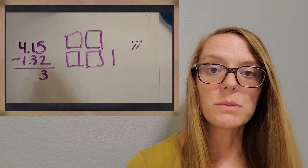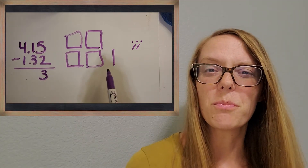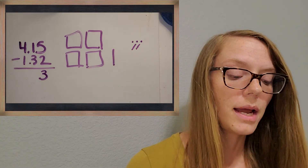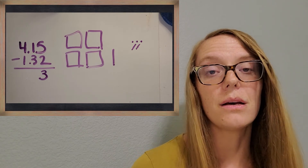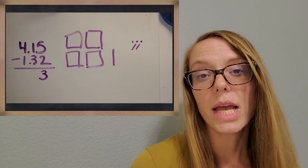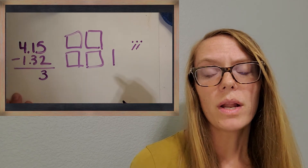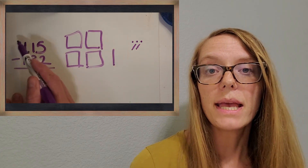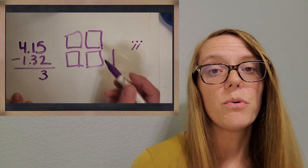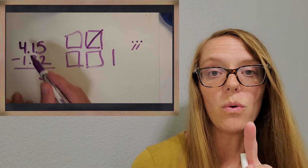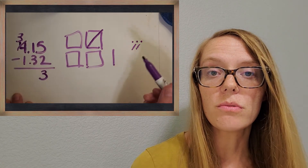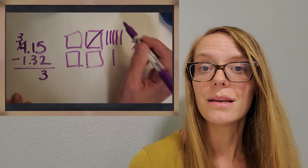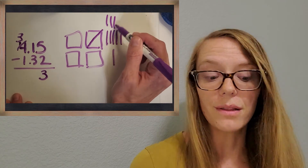Now let's take a look at the next place — that first one didn't have any regrouping, but let's see what happens here. I have 1 long, or 1 tenth, and I need to take away 3 tenths. That's where the problem is. I don't have enough to take away 3. So I go to the next biggest place and make what I call a trade or regroup. I can break one whole into 10 tenths — 10 of those longs — and then I'd definitely have enough.